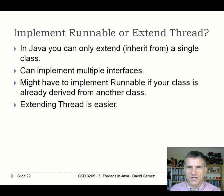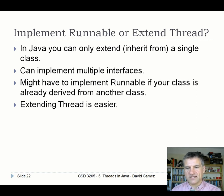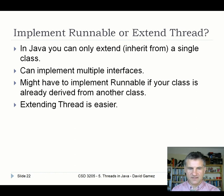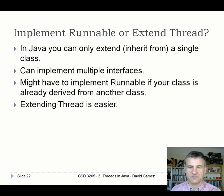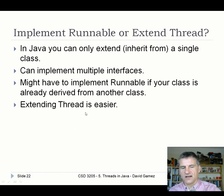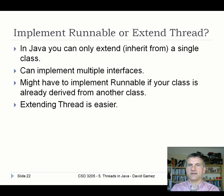So you've got these two choices — which should you use? In Java you can only extend from a single class, so if you're in a situation where your class is already extending another class for some required functionality but you also want it to be multi-threaded, you'd have to use the Runnable interface. Personally I find extending Thread easier and conceptually simpler — your class has all the threaded stuff in it and extends Thread, which is easier to think about. But you're welcome to implement Runnable if that makes more sense for what you're doing.